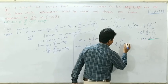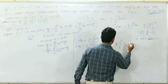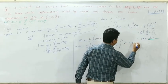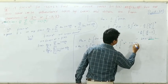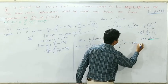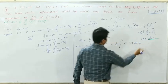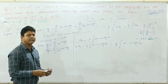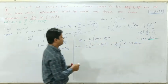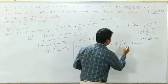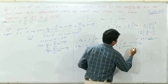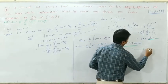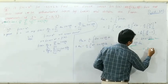Since x² is even and cos is also even, the product is even, so we can write aₙ = (2/3)·∫₀³ x²·cos(nπx/3)dx. Here we apply the Kronecker method for integration.